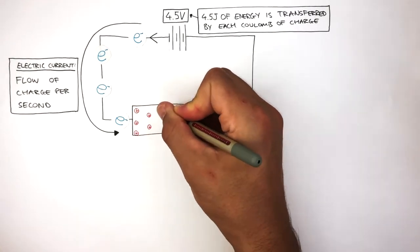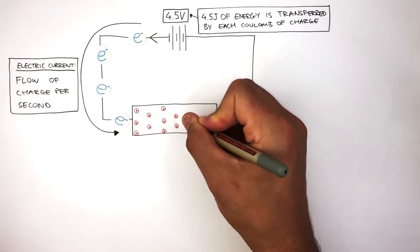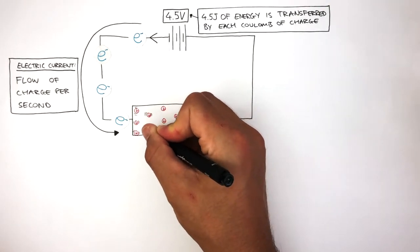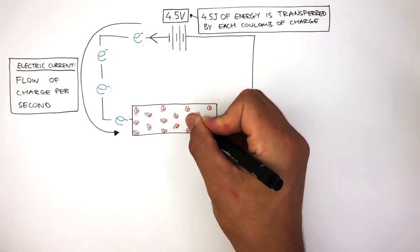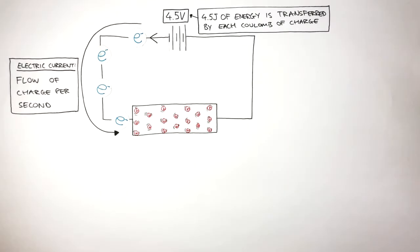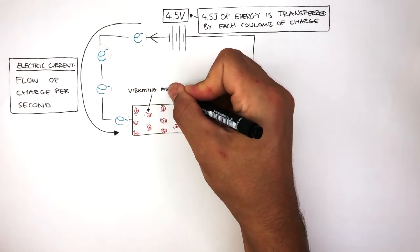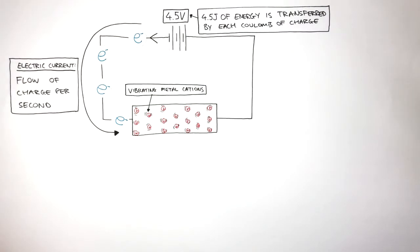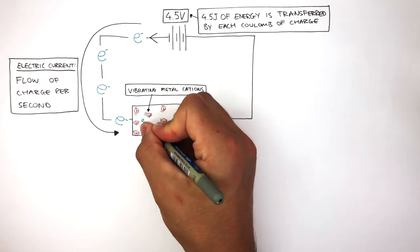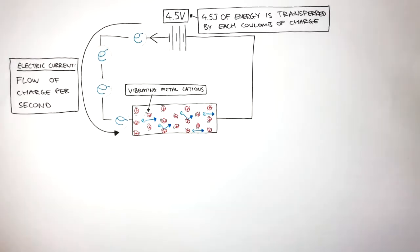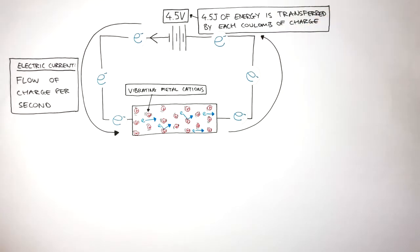In the resistor, these red circles with crosses represent the positive metal ions, and these lines represent how the positive metal ions are vibrating in a fixed position. These red circles represent the vibrating metal ions, also known as cations. As the current flows through the resistor, the electrons collide with the vibrating metal ions, then the current continues to flow around the circuit back to the battery.